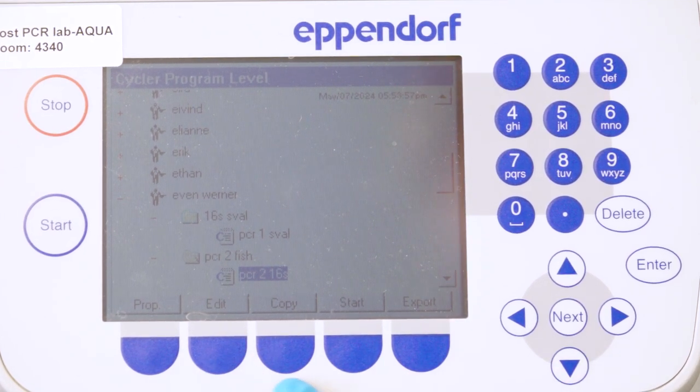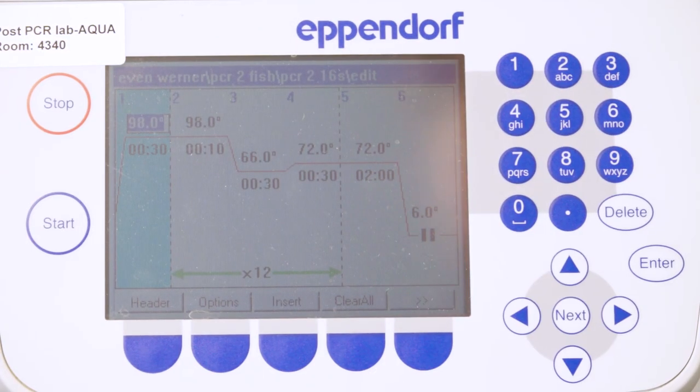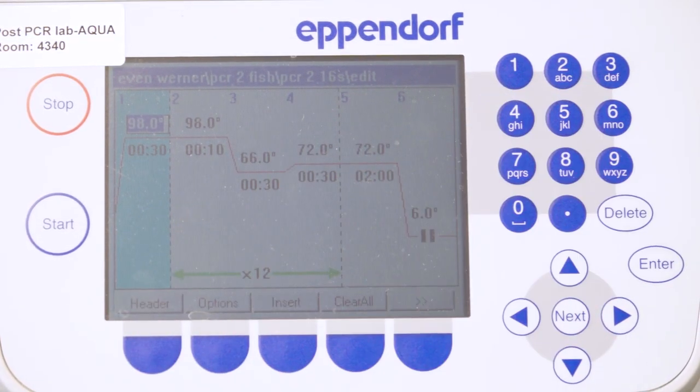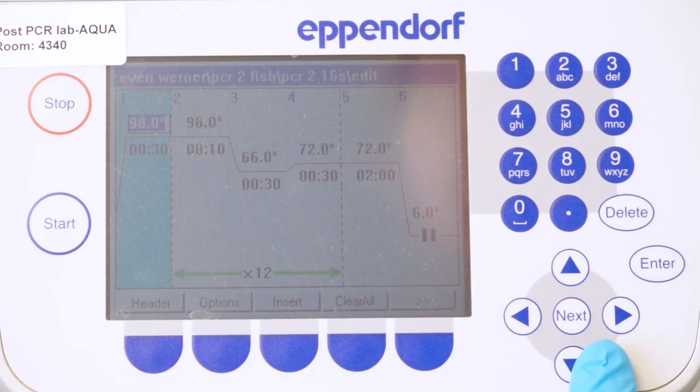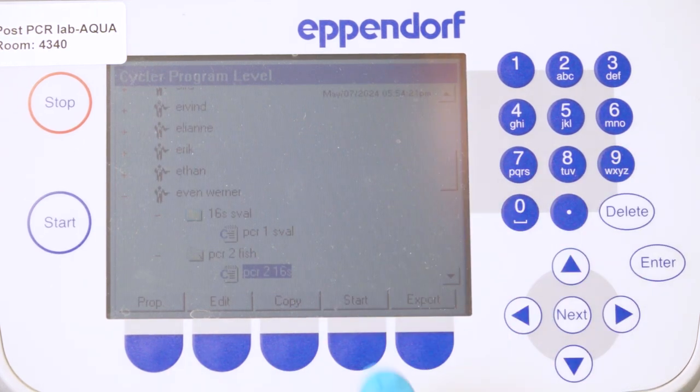Then I can go to edit. The reason why I go to edit is just to double-check if all the settings are correct. Here I compare with the protocol I'm using for the given primers. This one I know is correct—we have 12 cycles. Then I just exit, open the cap here.